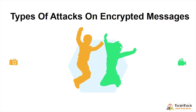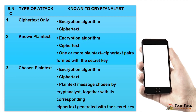Types of attacks on encrypted messages — there are a total of 5 attacks. First is ciphertext only: the cryptanalyst knows only the encryption algorithm and the ciphertext. Second is known plaintext: the cryptanalyst has the encryption algorithm, the ciphertext, and one or more plaintext-ciphertext pairs formed with a secret key.